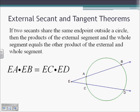Another theorem we have is the External Secant Theorem. If two secants share the same endpoint outside of a circle, then the product of the external segment and the whole segment is going to equal the other product of the external segment and the whole segment. So on secant EB, the external segment is EA. We multiply EA by the whole secant EB. So we get EA times EB equals EC times ED.